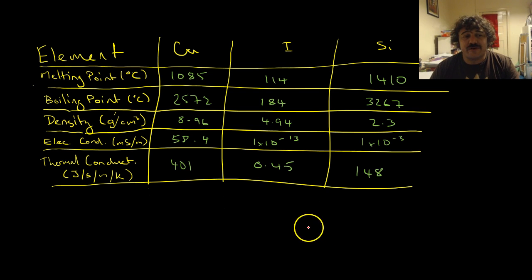So let's have a quick look at these. We've got several elements here. We've got a metal, a non-metal, a metalloid or semi-metal, whatever you want. So the melting point we'll see is 1085, 1114.